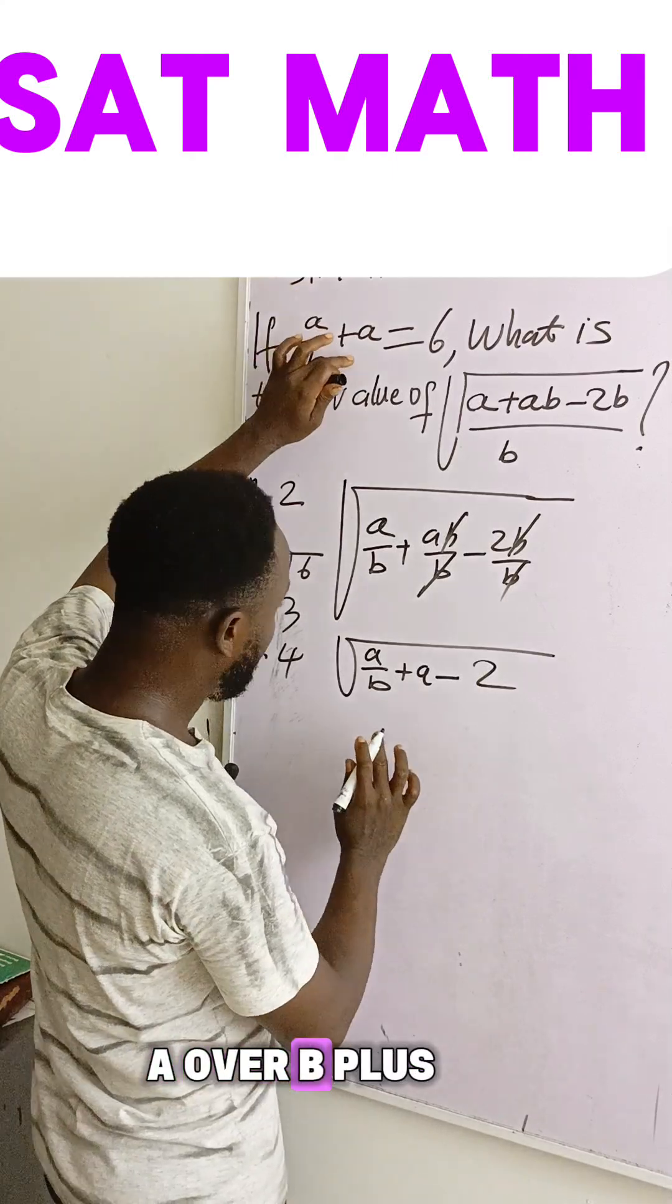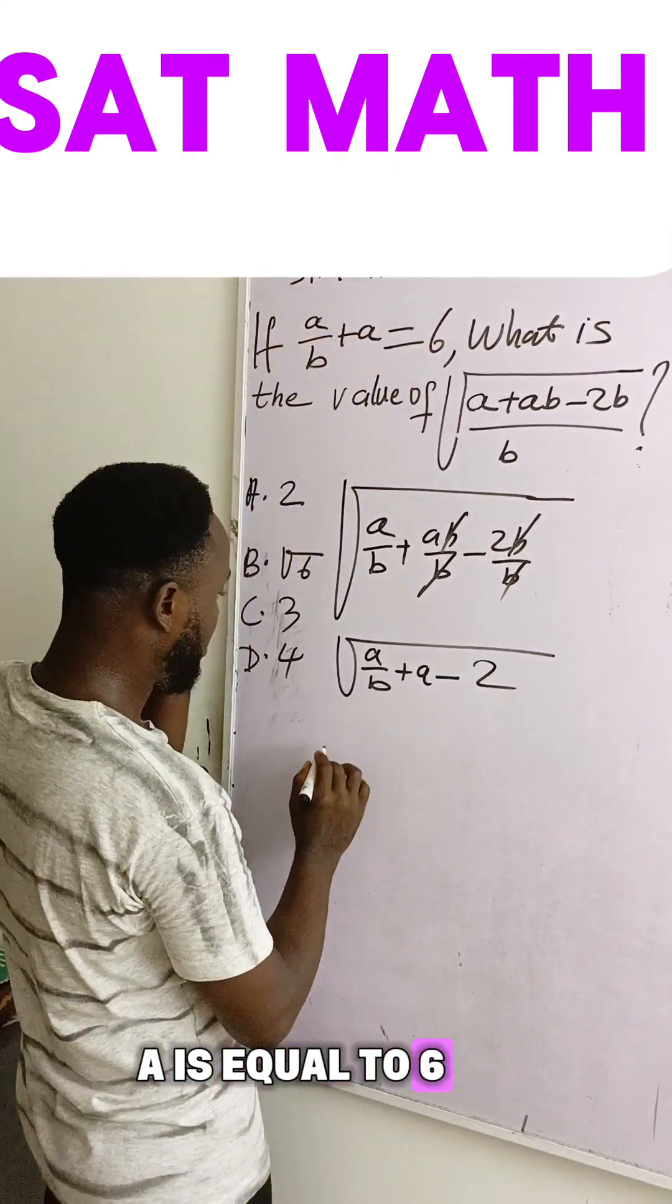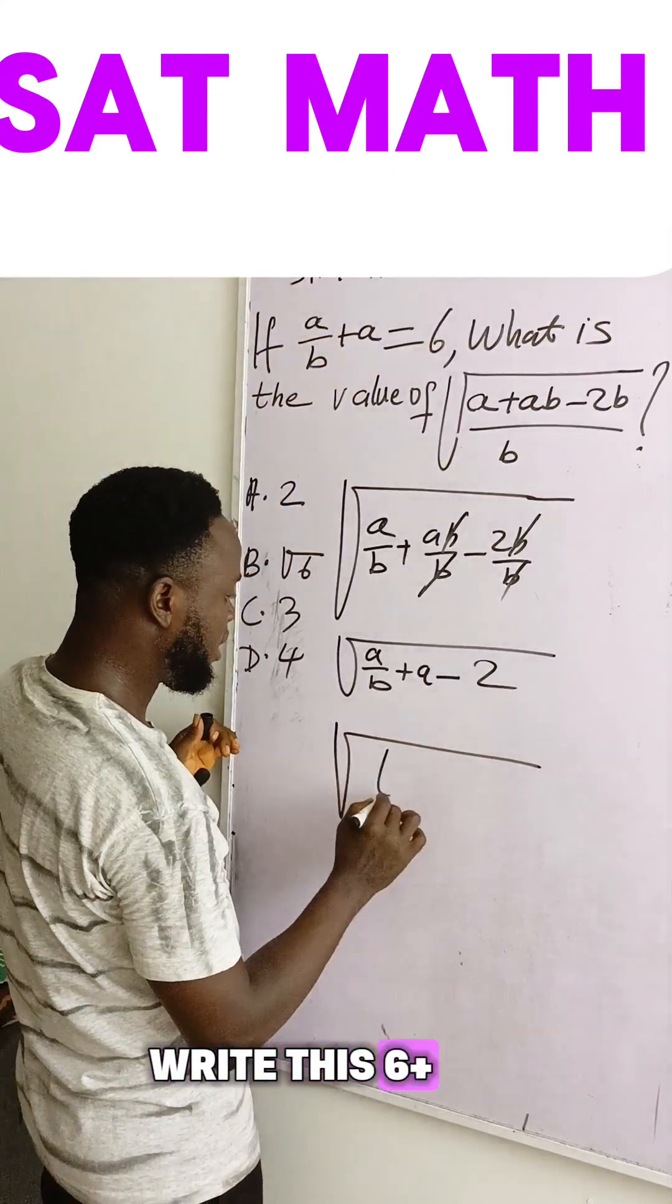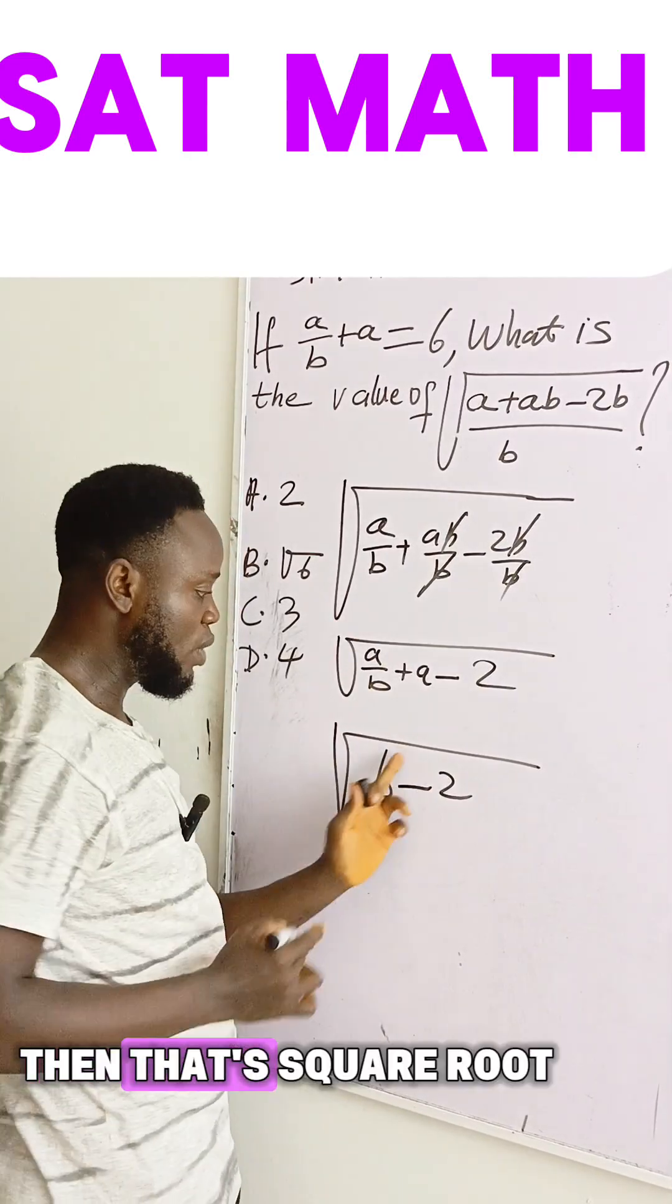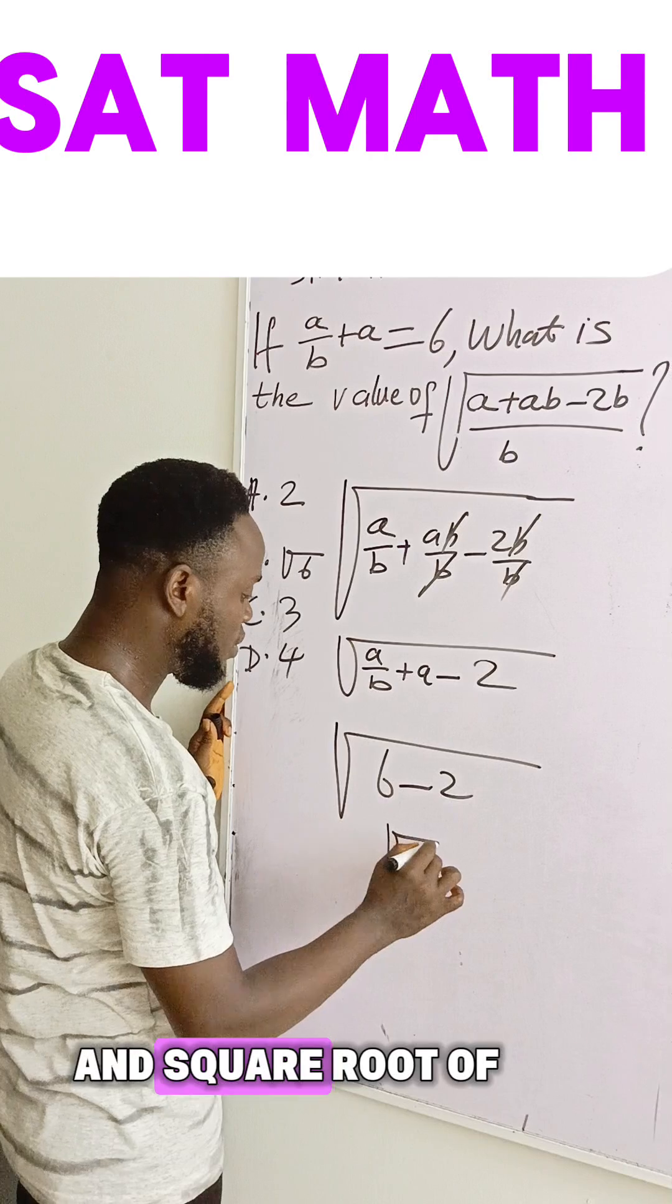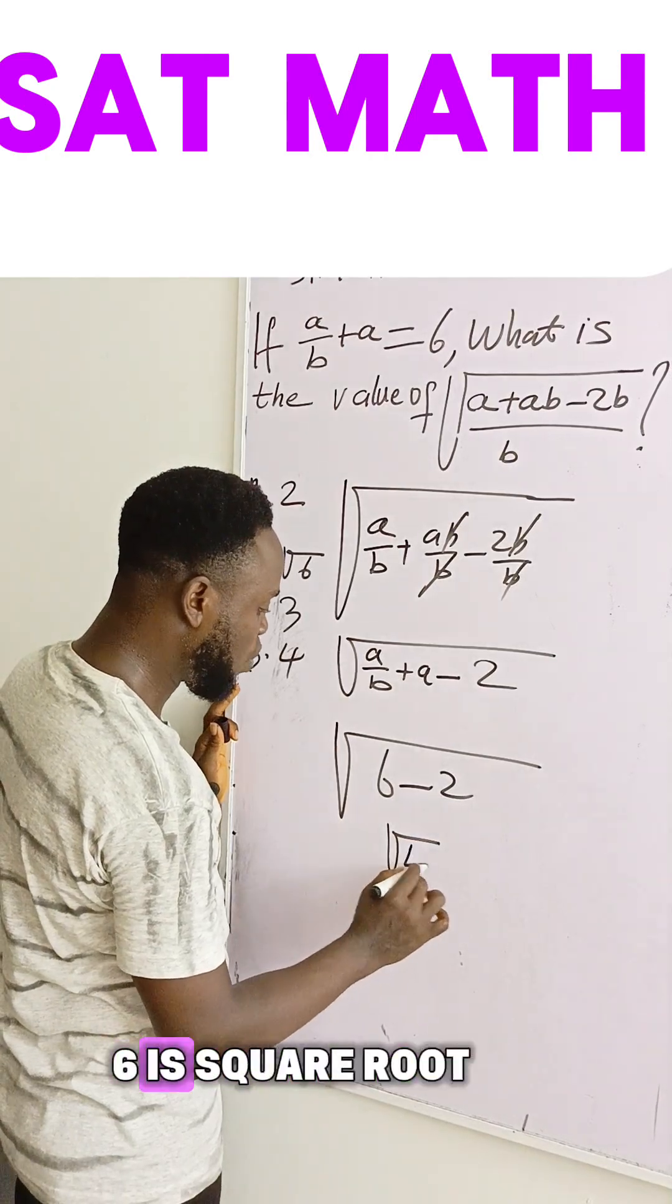And this question states a over b plus a is equal to six, so I will now write this six minus two. Then that square root, square root of six minus two is square root of four.